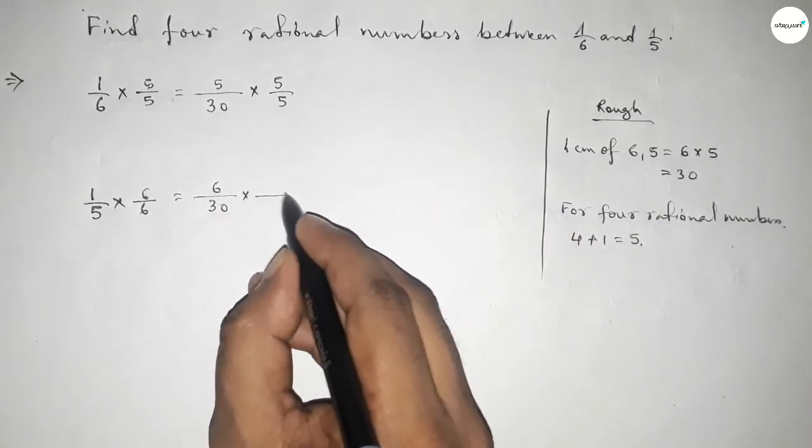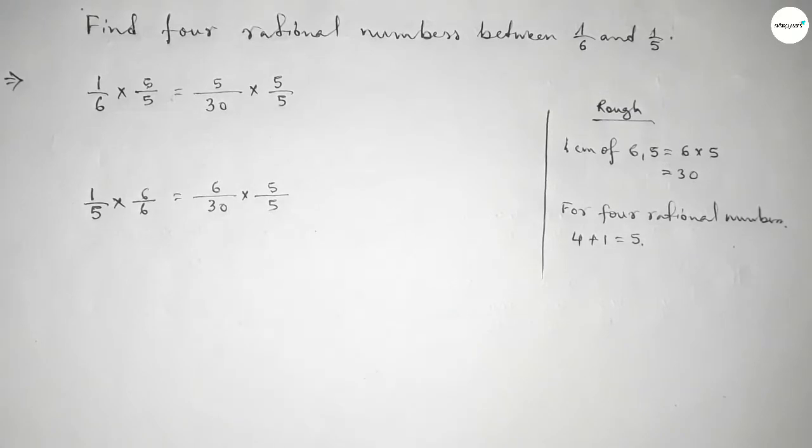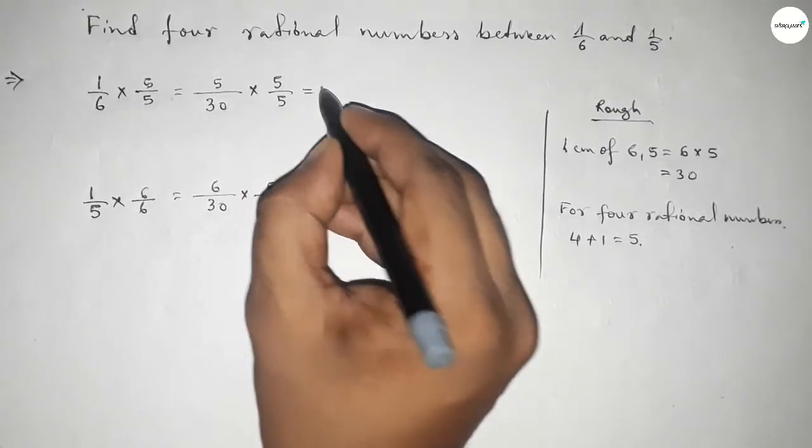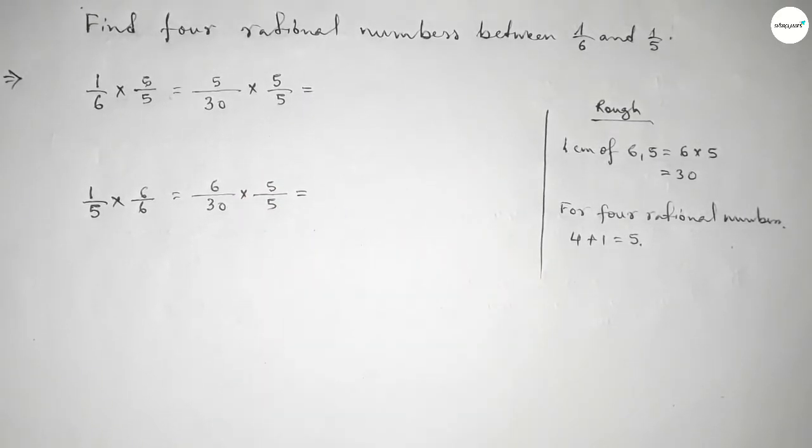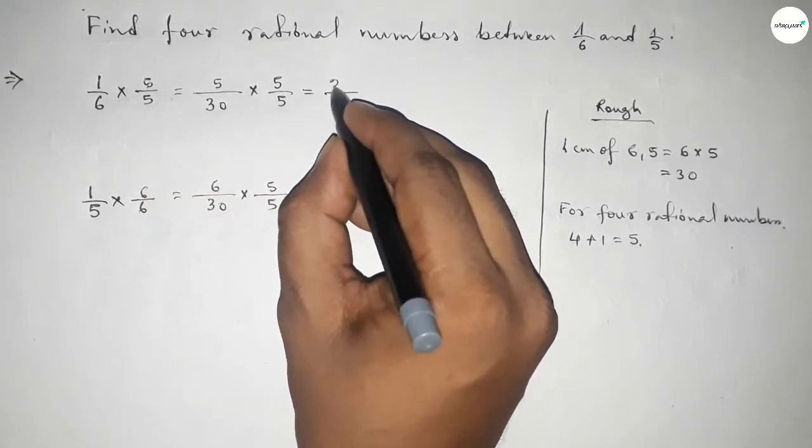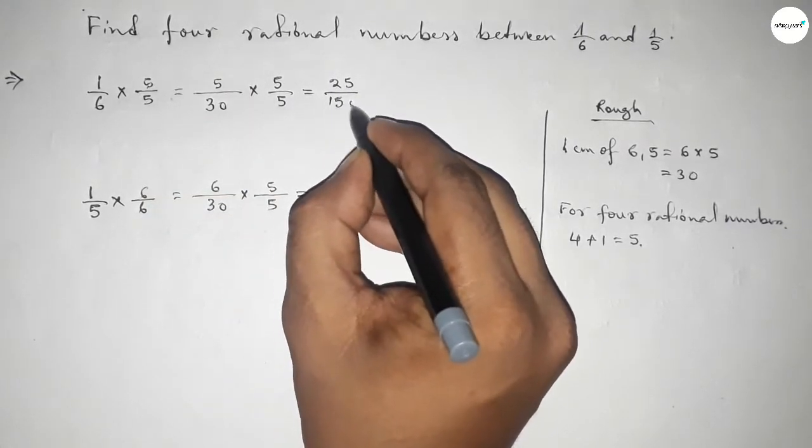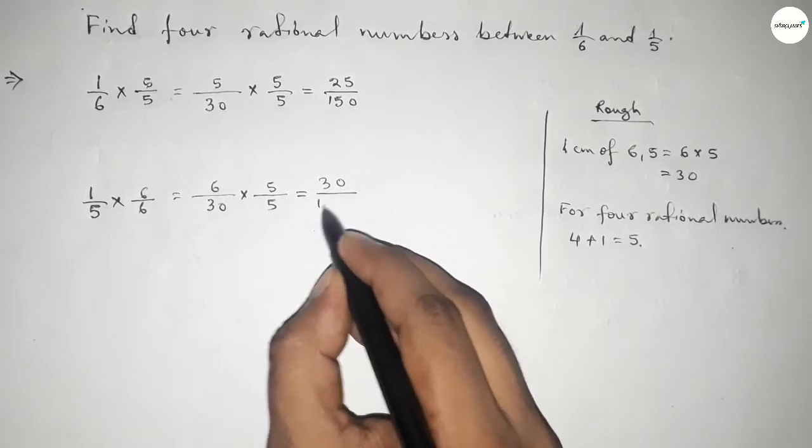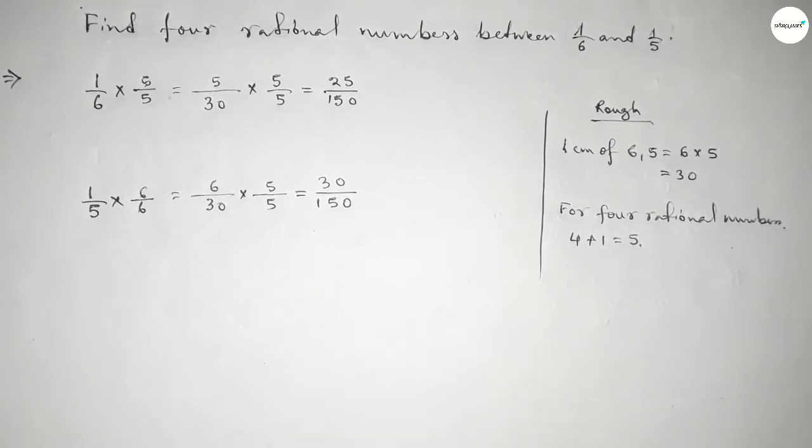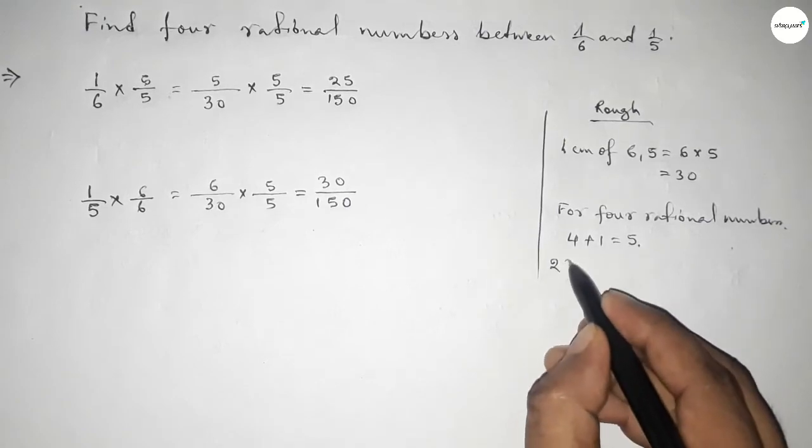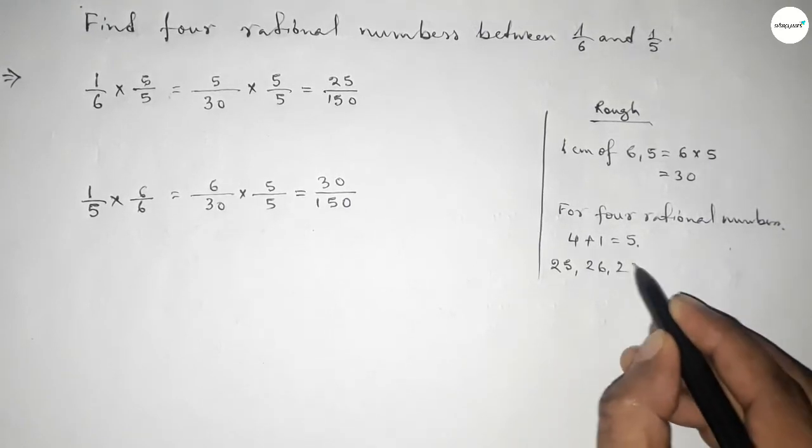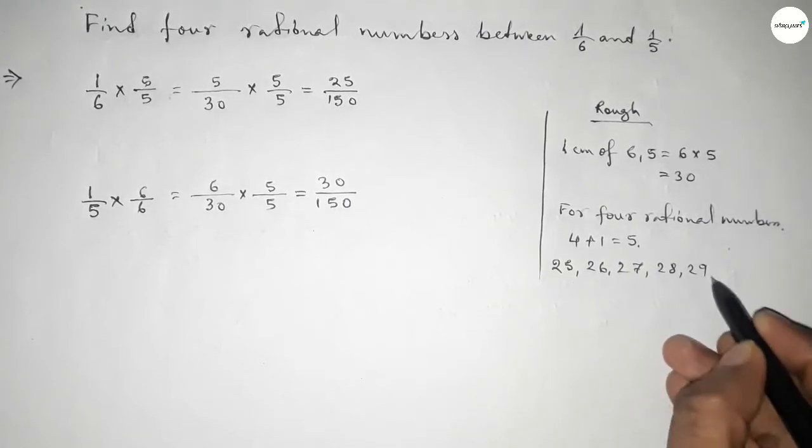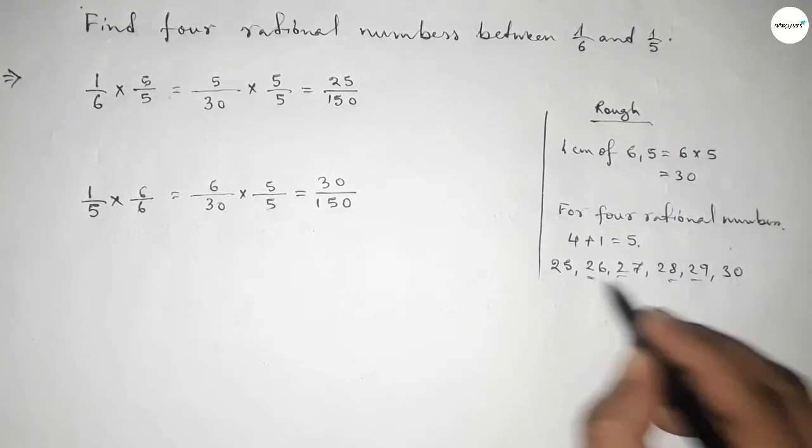Now this is 25 over 150 and this is 30 over 150. So between 25 to 30 we can find four natural numbers, and by these natural numbers we can form four rational numbers.